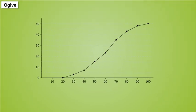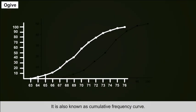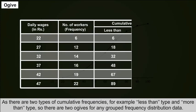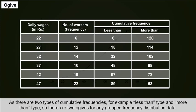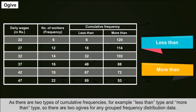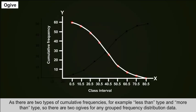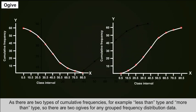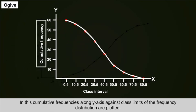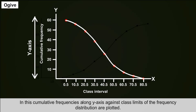Ogive: An ogive is also known as the cumulative frequency curve. Since there are two types of cumulative frequencies — less than type and more than type — there are two ogives for any grouped frequency distribution. In this, cumulative frequencies are plotted along the y-axis against the class limits of the frequency distribution.